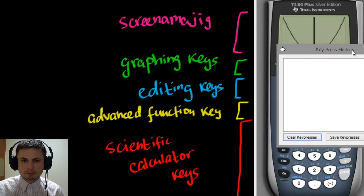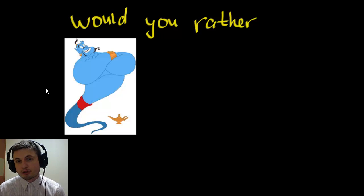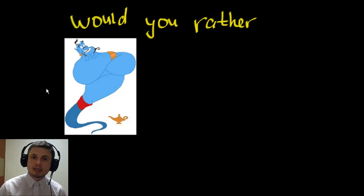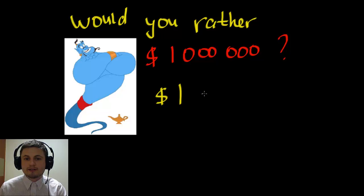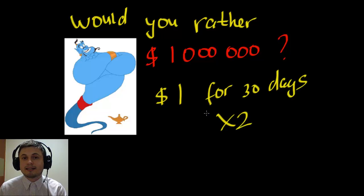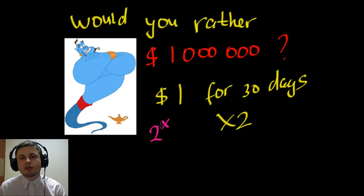Now let's work through a real problem. Imagine you find a magic lamp — the genie gives you two choices: choice one, a million dollars right now; or choice two, one dollar that doubles every day for a month. Which do you take? Let's find out using an exponential function. The second option is two to the power of x, and we're looking at x equals 30 days.